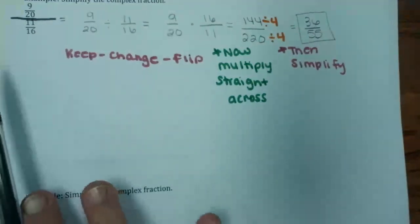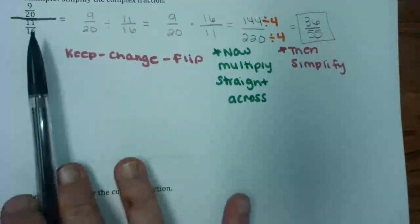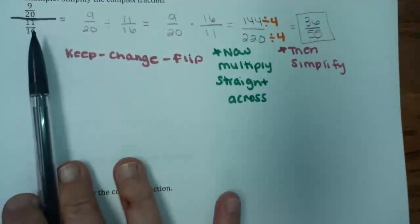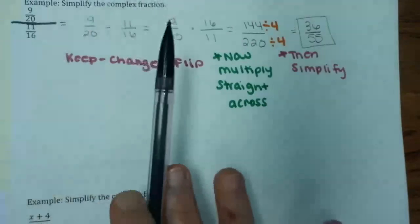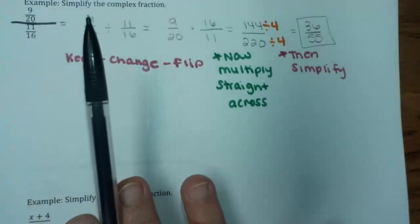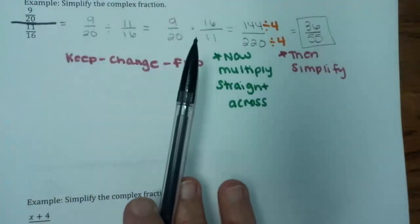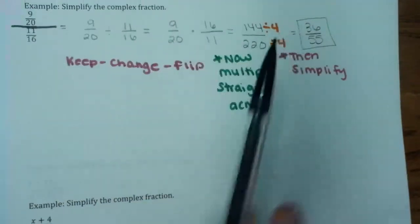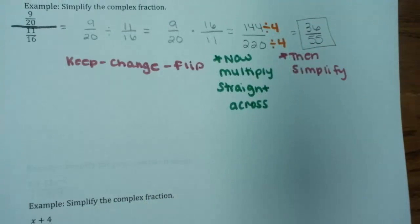So again, we changed our complex fraction to a division problem, then used keep, change, flip, multiplied across, and simplified.